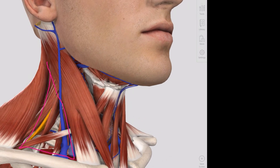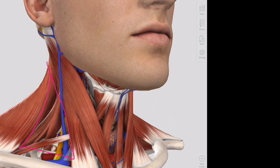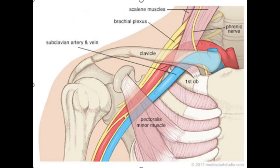Some of the important structures within this triangle are the subclavian vessels — the artery just behind and the vein just in front — and these pass in relation to the anterior scalene muscle and then enter the upper limb. The subclavian vein runs in front of the anterior scalene and the subclavian artery runs behind. Between the anterior scalene and the middle scalene we also have the trunks of the brachial plexus. The phrenic nerve runs over the anterior surface of the anterior scalene and down into the thorax, as seen in the top right-hand corner of this image.